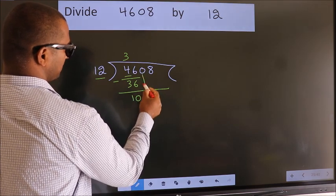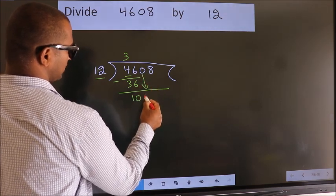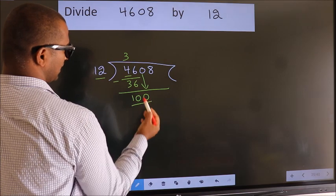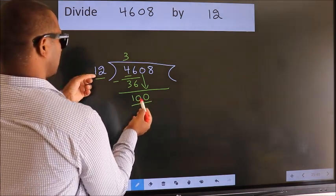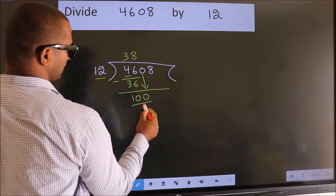After this, bring down the beside number. So 0 down. So 100. A number close to 100 in the 12 table is 12 eights, 96. Now we subtract. We get 4.